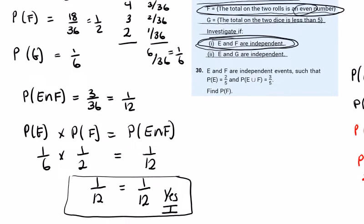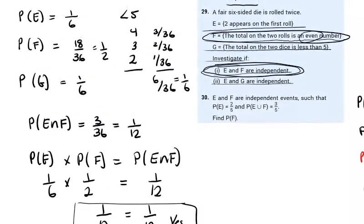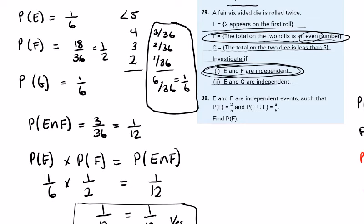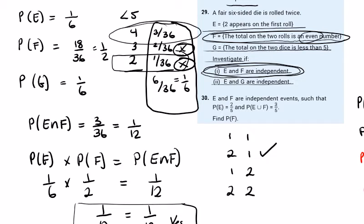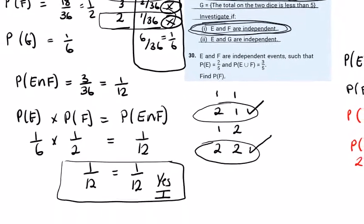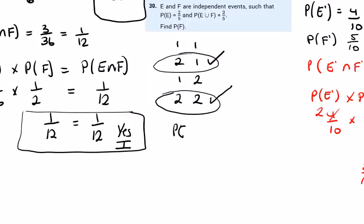Are E and G independent? G has 6 outcomes with total less than 5. How many of those have a 2 on the first die? Rolling a total of 2 requires 1+1, so no 2 on the first die. Rolling a total of 3: could be 2+1 (yes, 2 on first die) or 1+2. Rolling a total of 4: could be 2+2 (yes). So 2 of the 6 outcomes have a 2 on the first die, giving P(E ∩ G) = 2/36 = 1/18.